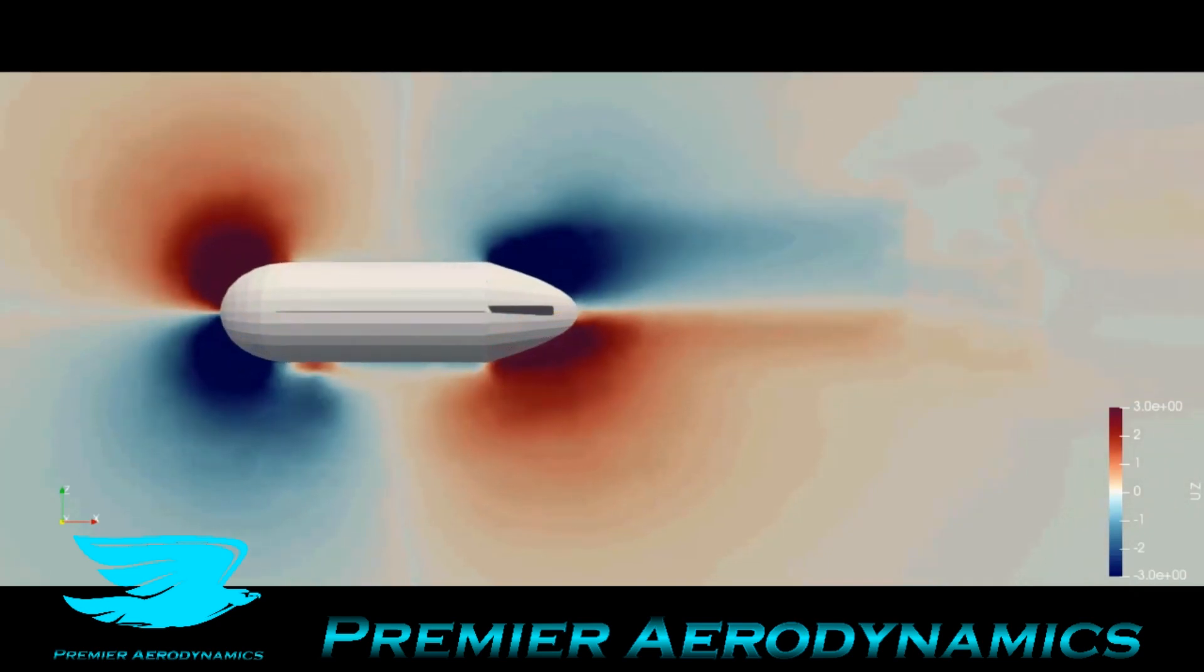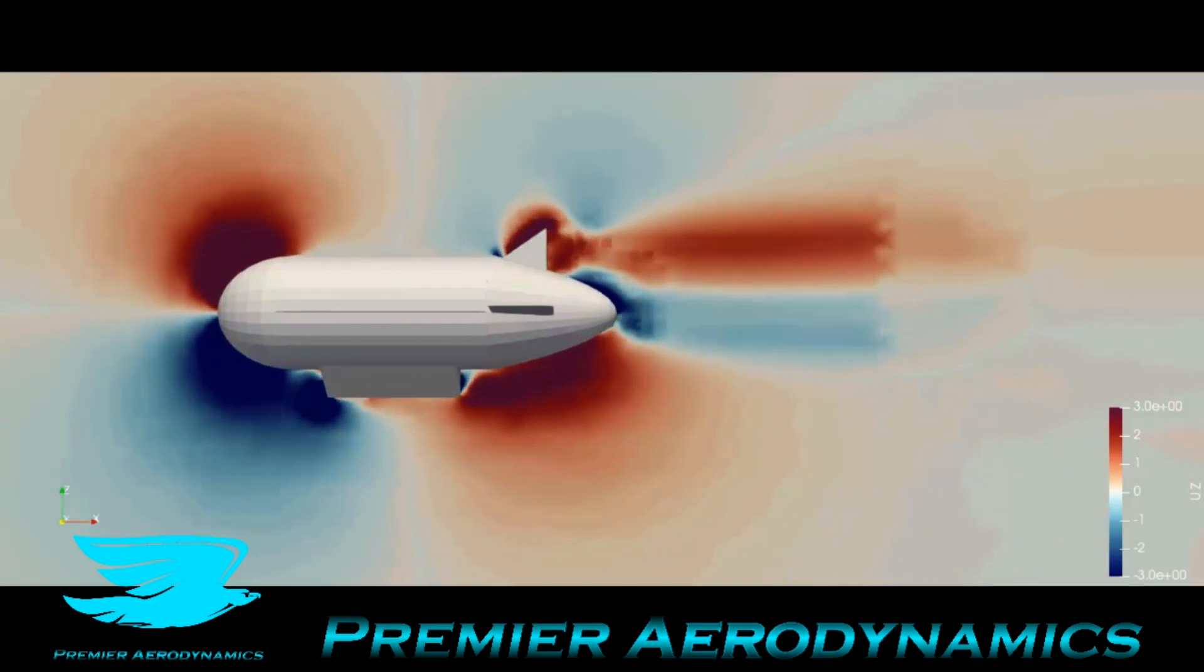And it just intensifies as you go over the blimp. That's cool. So obviously that ramp forces all the flow up. But even still behind the ramp, the flow is still moving up quite a bit, that recirculation zone.